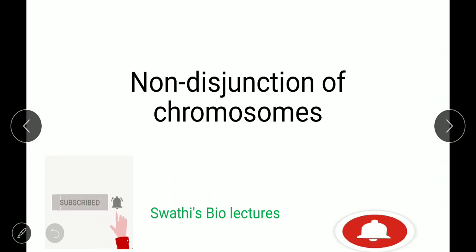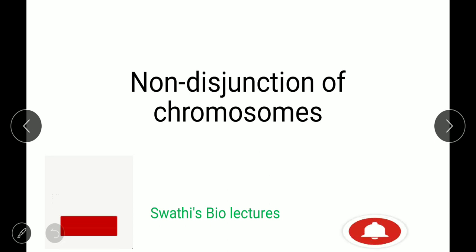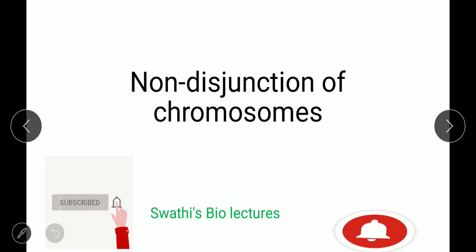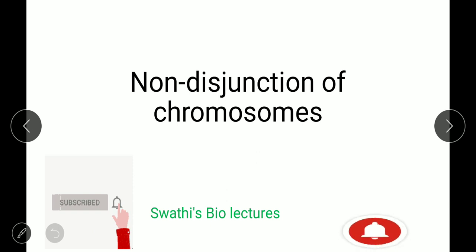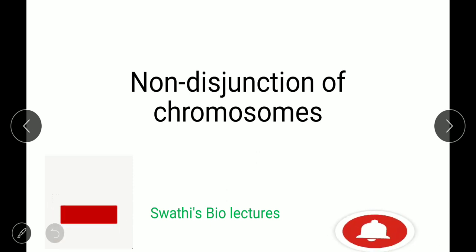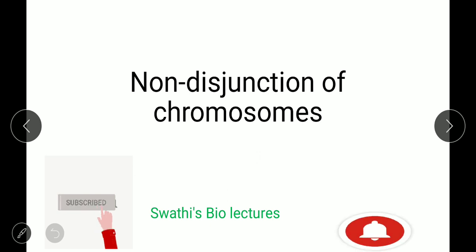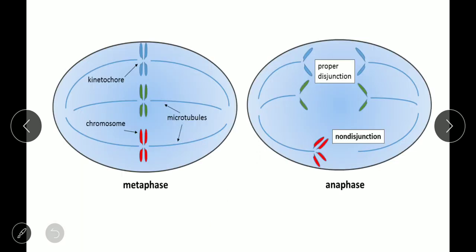In this video we will understand the non-disjunction of chromosomes. Non-disjunction of chromosomes is the failure of chromosomes to separate properly during cell division. This non-disjunction may occur during mitosis as well as meiosis. There are many stages in cell division: prophase, metaphase, anaphase, and telophase.